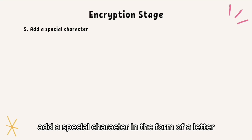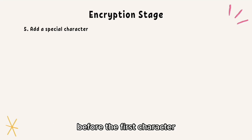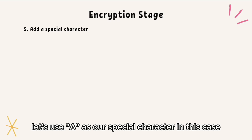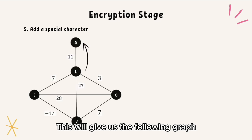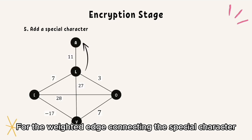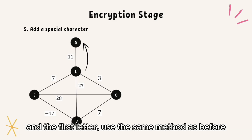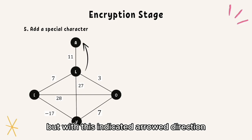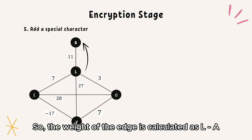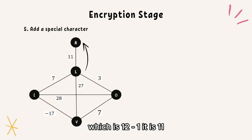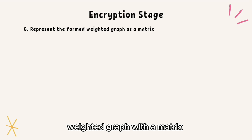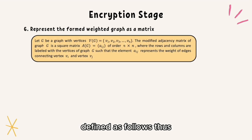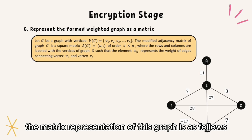Next, we add a special character — in the form of a letter — before the first character to point to the first character. Let's use A as our special character in this case. This gives us the following graph. For the weighted edge connecting the special character to the first letter, we use the same method as before, but with the indicated arrow directions. So the weight of the edge is calculated as L minus A, which is 12 minus 1, giving us 11. The next step is to represent the weighted graph with a matrix defined as follows. Thus, the matrix representation of this graph is as follows.